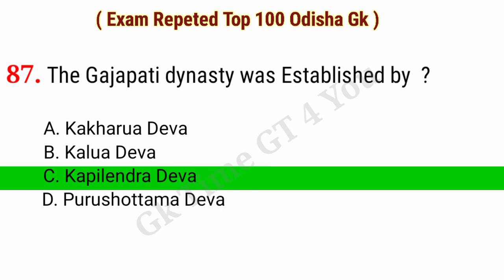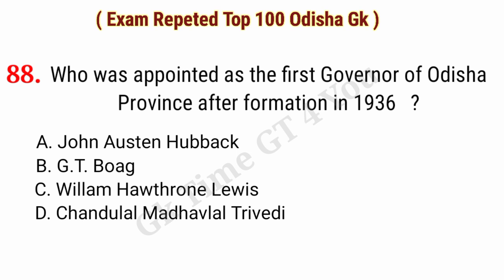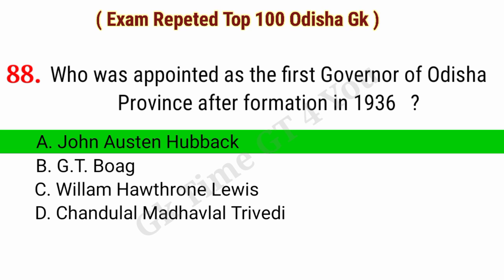Question number eighty-eight: Who was appointed as the first governor of Odisha province after its formation in 1936? Right answer, option A: John Austin Hubbard.